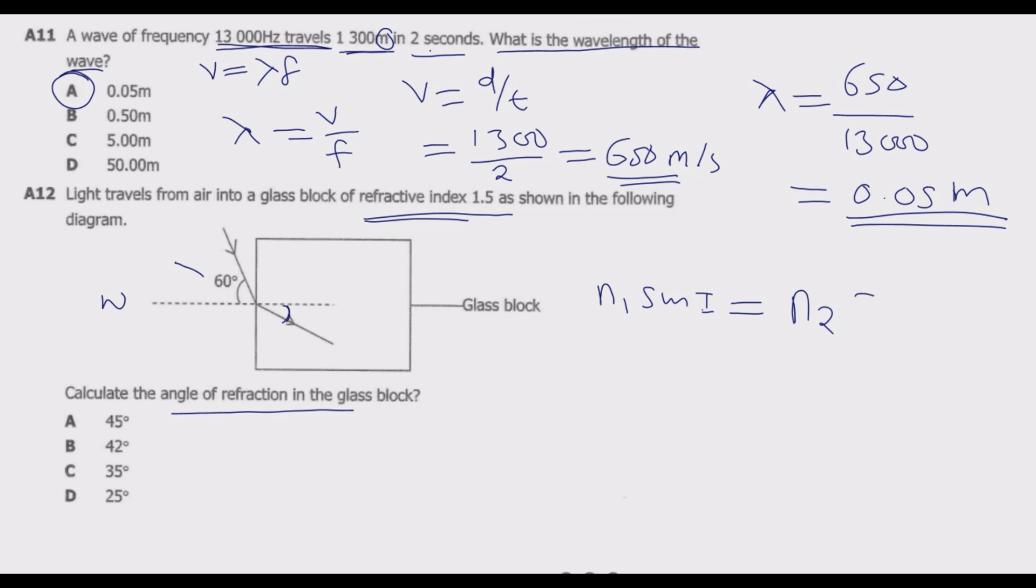The relationship is n1 sine angle of incidence equals n2 sine angle of refraction. Medium 1 is air coming to the block. The block n2 equals 1.5. The refractive index of air, n1, equals basically 1. So we substitute: 1 times sine 60 degrees equals 1.5 times sine r. This is the r we are looking for.